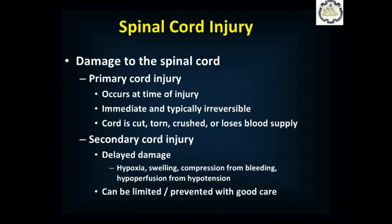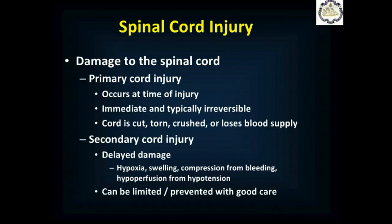Just like with traumatic brain injury, you can get primary and secondary spinal cord injury. The primary cord injury happens at the time of injury, is typically irreversible — if someone falls and has no motor function from the waist down, they are unlikely to ever get it back because the cord is cut, torn, or damaged physically. Secondary cord injury — just like secondary brain injury — can come from swelling, bleeding, or hypoxia and hypotension. We do the same things to protect the spine that we do to protect the brain: prevent hypotension and prevent hypoxia.